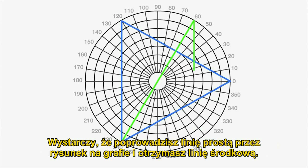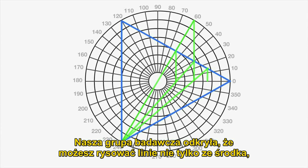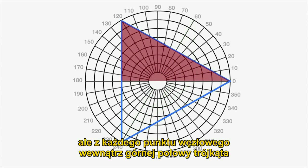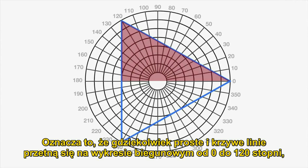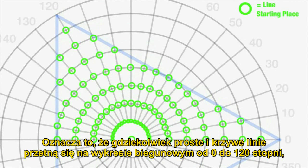This information has been taken light years beyond what I just showed you, though. A research team found that you can draw these lines not only from the center, but from any nodal points inside the upper half of the triangle, and you will come up with all known harmonics in existence. Basically, this means that anywhere the straight line and curved lines on the polar graph cross from 0 to 120 degrees and start making the pattern, you will come up with all known harmonic systems.